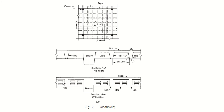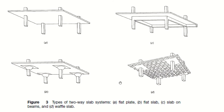Looking at the waffle slab sections: this is a three-inch slab and these are your ribs, which are 20 to 30 inches apart. The ribs can be empty or filled with filler material. As a summary of all types: the first case is a two-way slab system where the slab rests on beams which transfer load to columns; the second is a flat plate where the slab rests directly on columns; the third is a flat slab with column capitals and drop panels near the columns; and the fourth is a waffle slab.